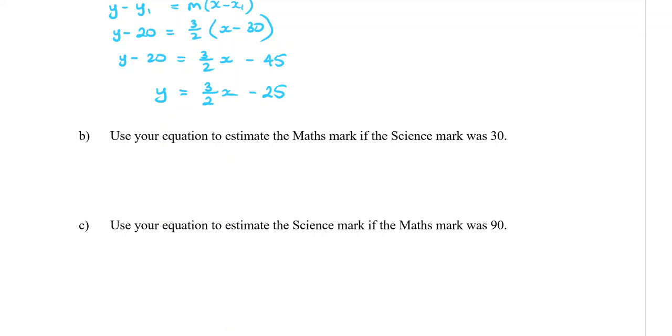Use your equation to estimate the maths mark if the science mark was 30. Maths was the x-axis and science was the y-axis, so if the science mark was 30, that 30 is the y in the equation. When y equals 30: 30 equals 3 over 2 x minus 25. Add the 25 over, we get 55. Then divide by 3 over 2, I got 36 and 2 thirds.